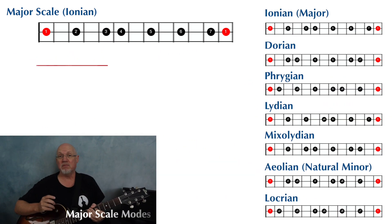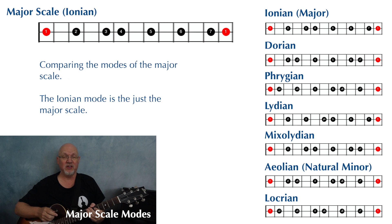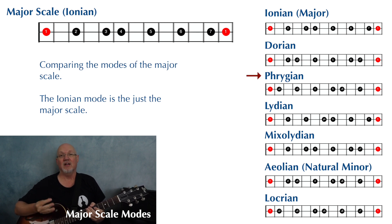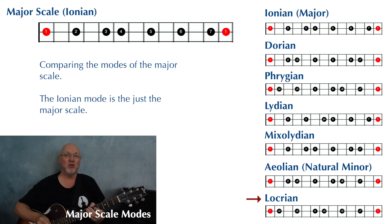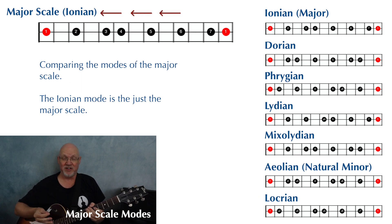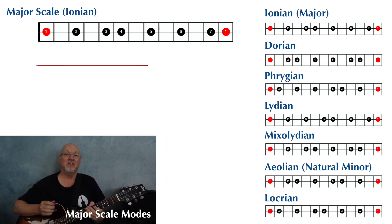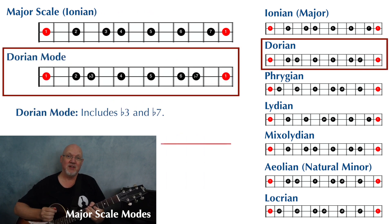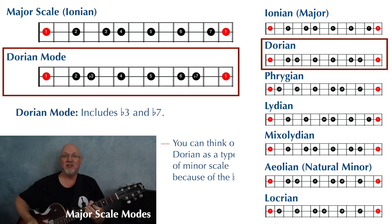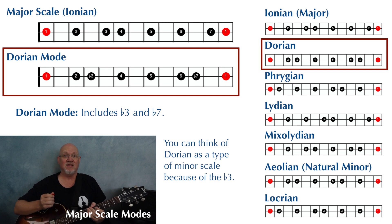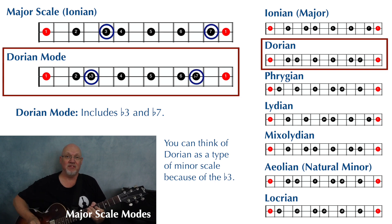We're going to go through the modes of the major scale first: Ionian, Dorian, Phrygian, Lydian, Mixolydian, Aeolian, and Locrian. Ionian is just fancy talk for the major scale. Now compared to the major scale, the Dorian mode has a flat three and a flat seven.